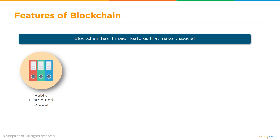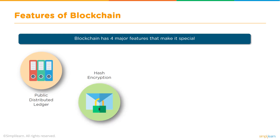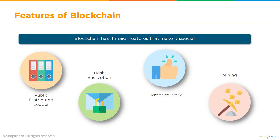Blockchain has four major features that make it special: it is a public distributed ledger, it uses hashing encryption, it uses a proof-of-work consensus algorithm, and it has entities called miners who are constantly working to maintain the validity of all transactions on the blockchain network to keep the network sanitized.